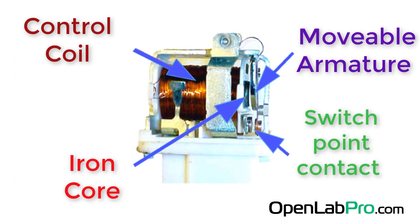Please look at the inside of a relay. These are the main parts of relay. The electromagnet consists of a copper coil wrapped around an iron core. The movable armature is the moving part of the relay. The armature opens and closes the contact.